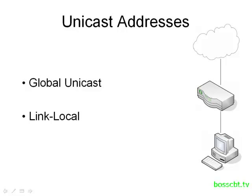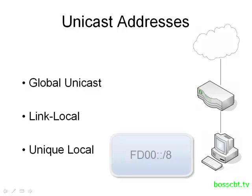The last type of unicast also has an equivalent in IP version 4 and is known as the unique local address. These all come from the same range FD00::/8. Whenever you see an IP address beginning with FD00, you know that it is a unique local address.